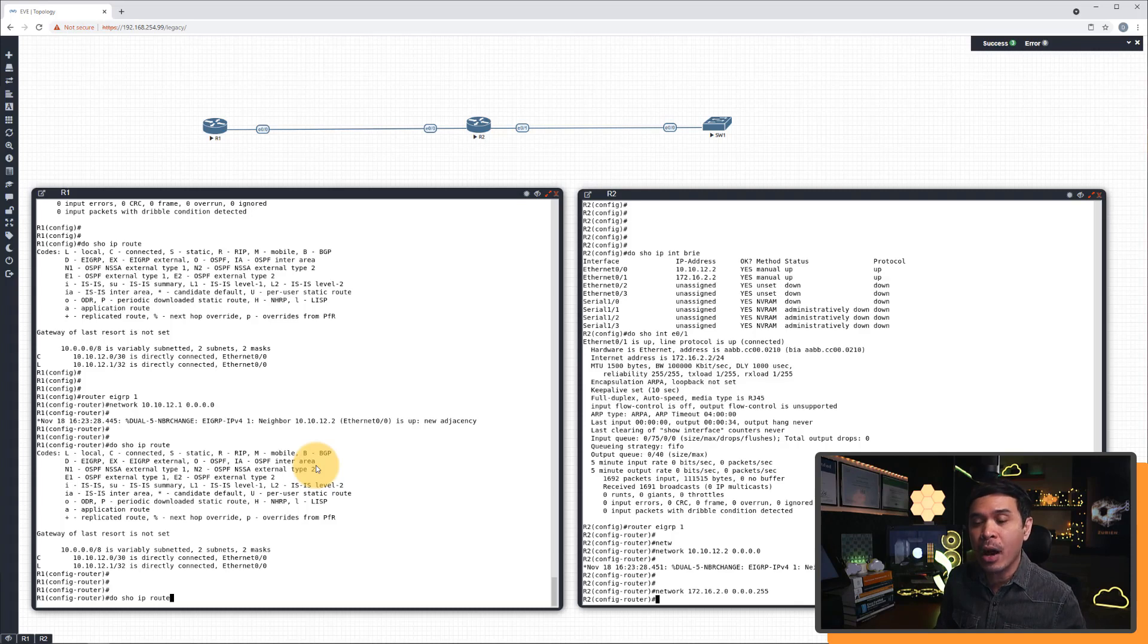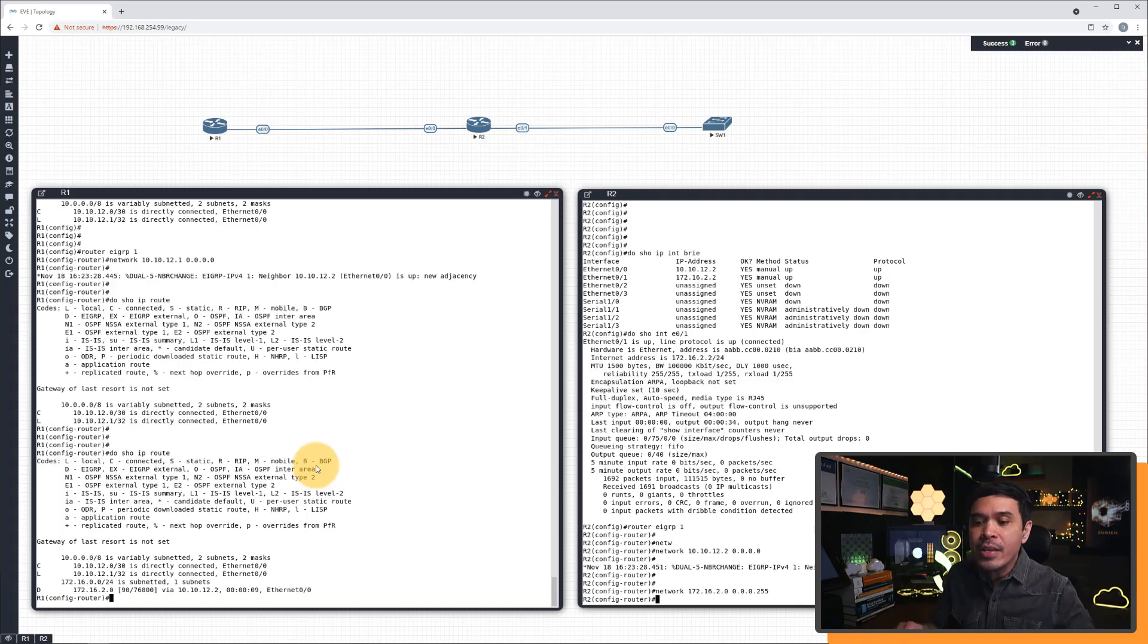We're going to verify if this new network has been learned by R1. I'm going to rerun show IP route. And look at that! We have now the network learned, and it's via EIGRP with the code D. And look at the value! This is the metric that we have calculated exactly the value 76,800.